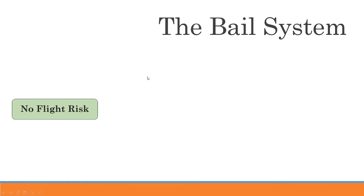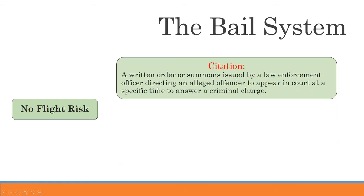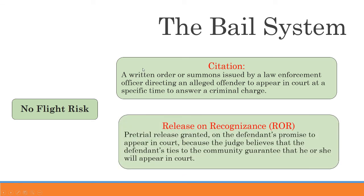If you are not a flight risk and you're not going to endanger the community, the court might give you a citation — a written order or summons issued by a law enforcement officer directing you to show up to court. The next option is a release on your own recognizance: pre-trial release granted on the defendant's promise to appear in court, because the judge believes the defendant's ties to the community guarantee he or she will appear.